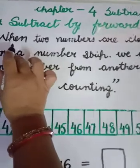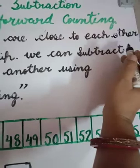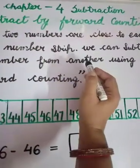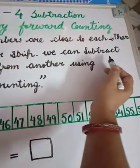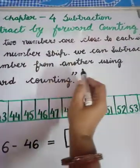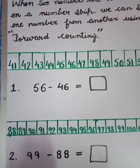Let's see when two numbers are close to each other on a number strip. Today we'll do subtraction on the number strip. We can subtract one number from another using forward counting. How do we subtract a number by forward counting?